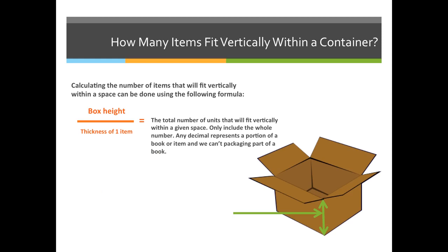This is a little easier. All we do is take the box height and divide it by the thickness of one of the items. So, if we have a box that's 10 inches tall and a book that's 2 inches thick, 10 divided by 2 means we can fit 5 books tall.